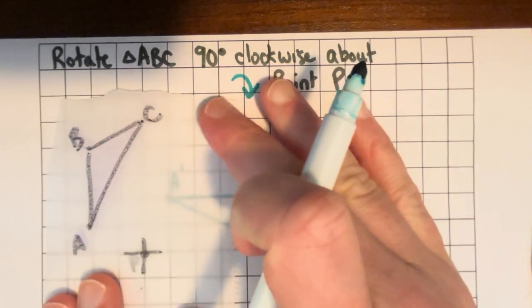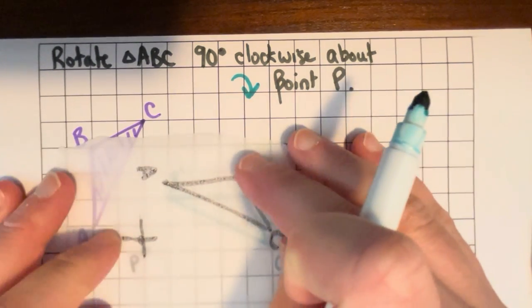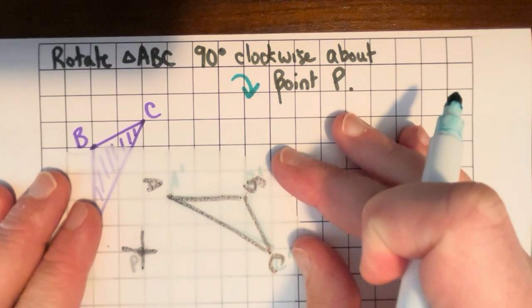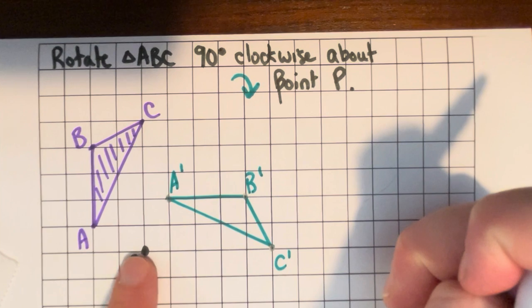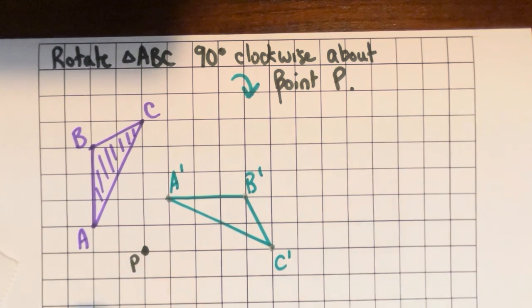And as you practice these, as you predict and then check, you'll just get better at imagining where they're all going to go. All right. So that was how we rotated a triangle 90 degrees clockwise about this point that was off of the triangle. All right. Thanks.